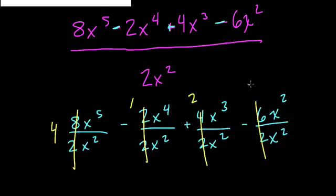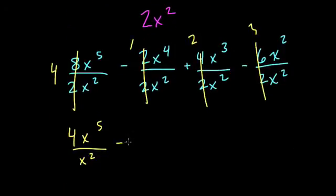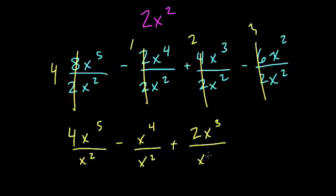and 6 over 2 is 3. So now we have 4x to the 5th over x squared minus x to the 4th over x squared plus 2x to the 3rd over x squared minus 3x squared over x squared.